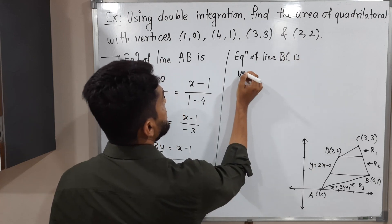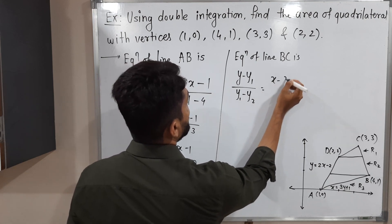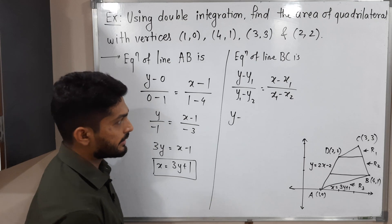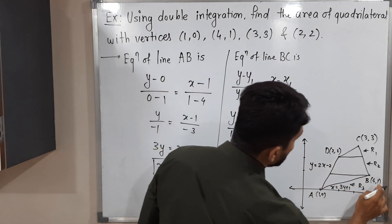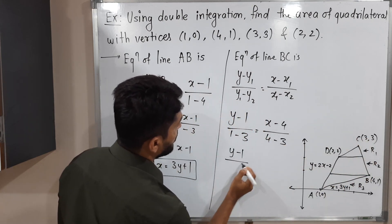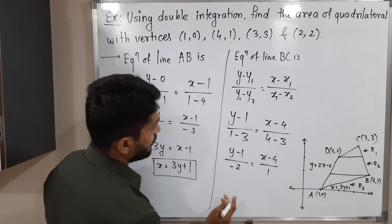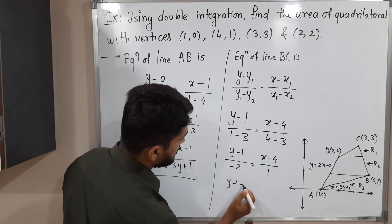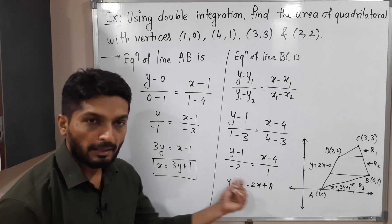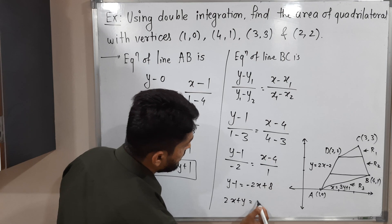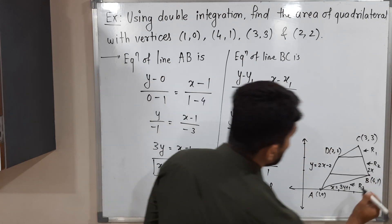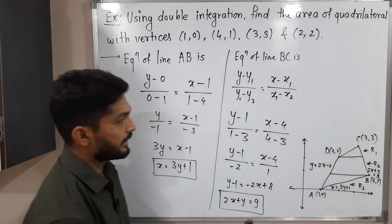For line BC, using points B(4, 1) and C(3, 3), we substitute into the formula: (y − 1)/(−2) = (x − 4)/1. Cross-multiplying and rearranging gives 2x + y = 9.